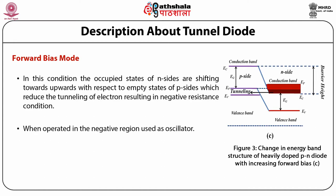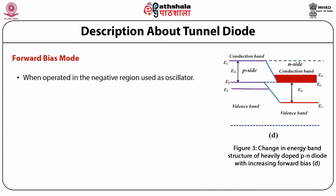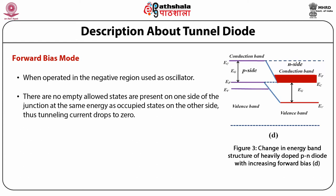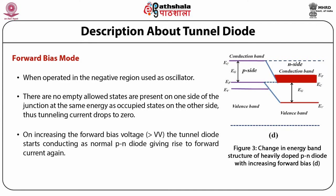When operated in the negative resistance region, the tunnel diode can be used as an oscillator. When the forward bias is further increased to Vv, that is the valley voltage, there are no empty allowed states present on one side of the junction at the same energy as occupied states on the other side. Thus, tunneling current drops to zero as shown in figure D. On again increasing the forward bias voltage, the tunnel diode starts conducting as a normal P-N diode, giving rise to the forward current gain.